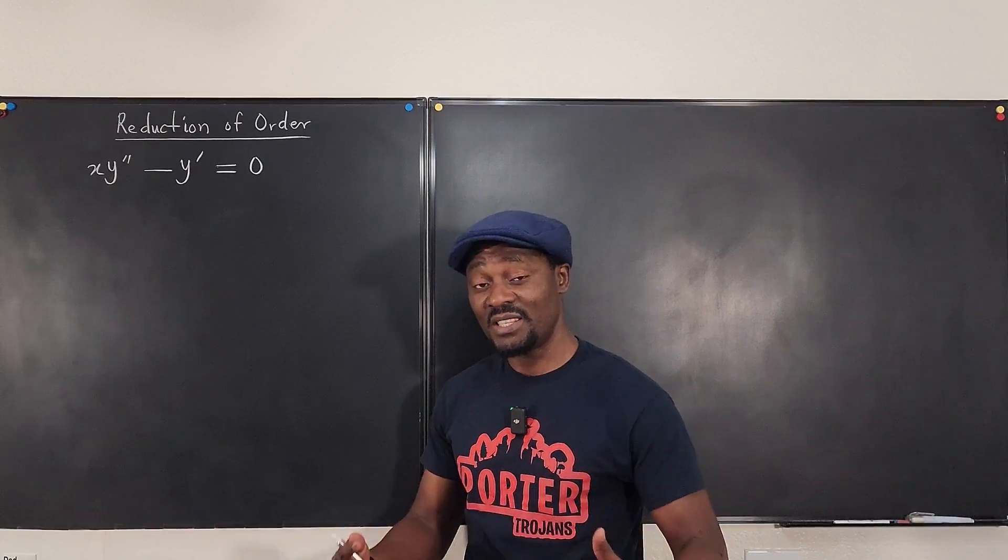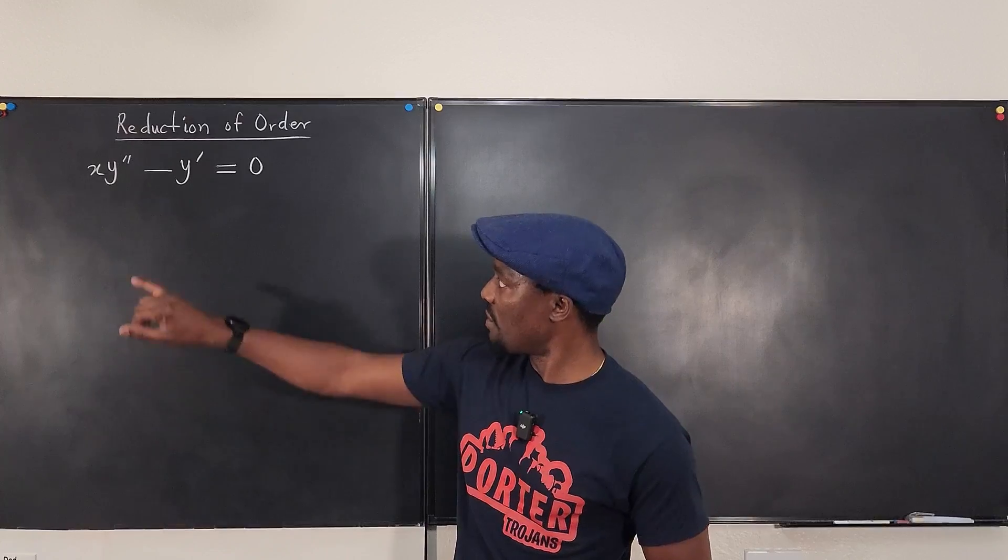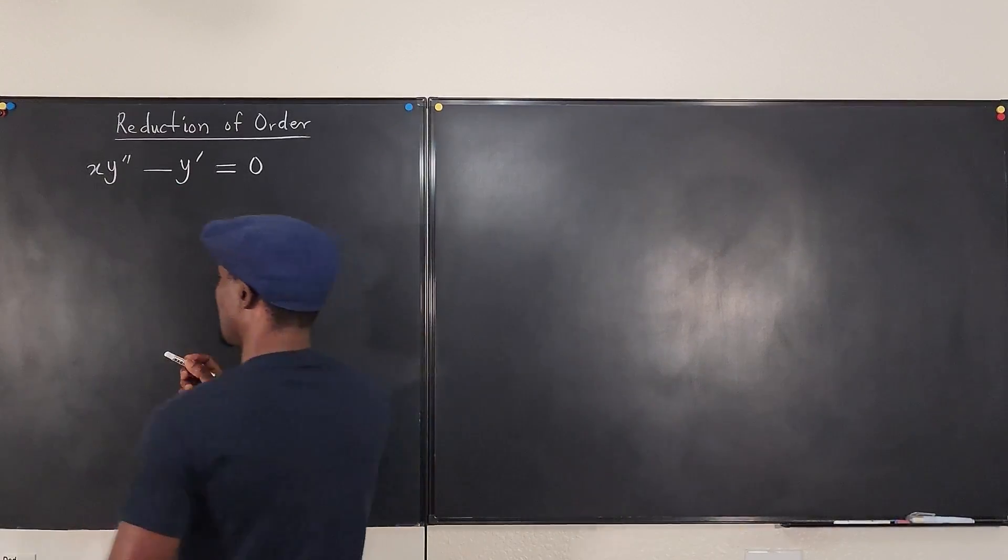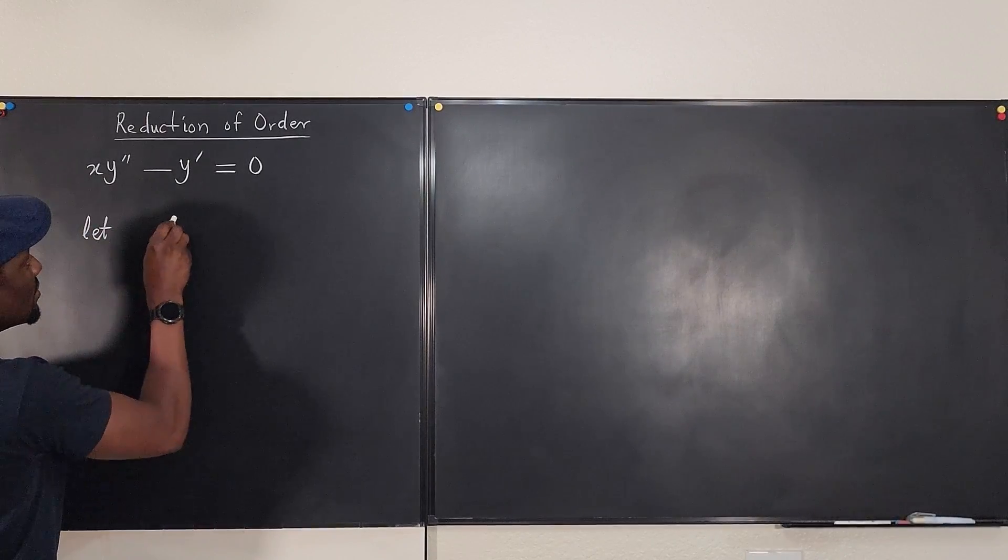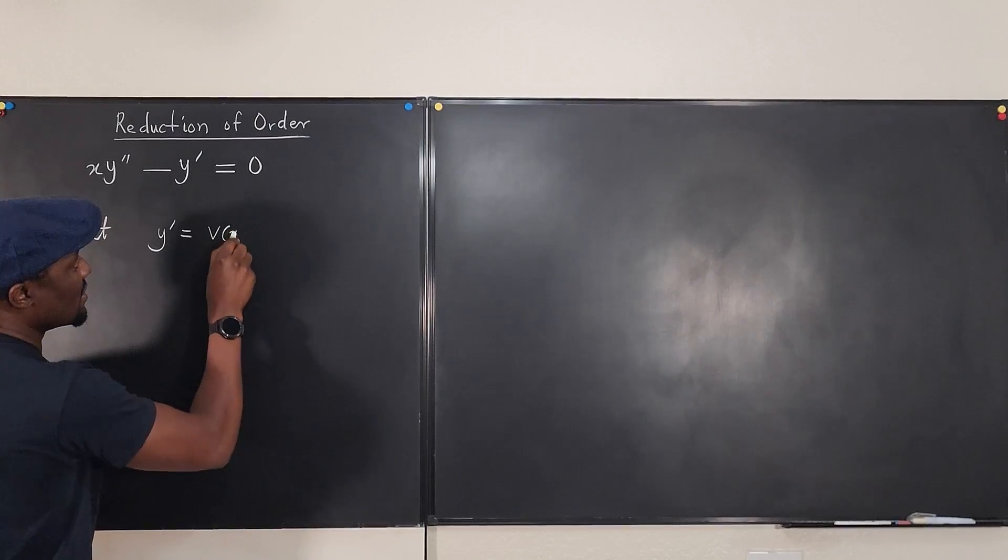So the first thing and the safest thing to do is to look for another function that represents what we know how to deal with. So we're going to say, let y prime be equal to v and let v be a function of x.